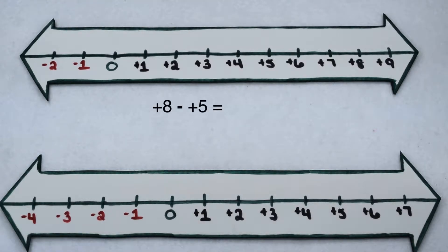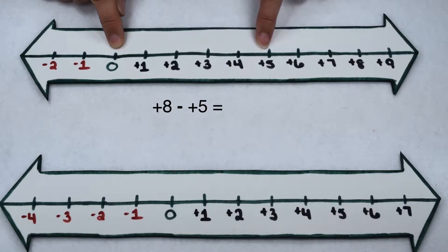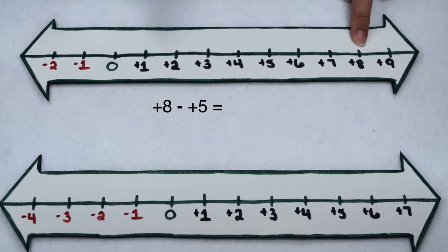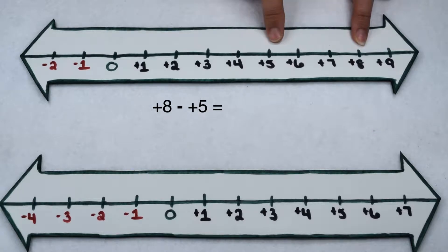Let's start by illustrating positive 8 minus positive 5. To do that, we will start at 0, and positive 8 tells us we're going to go 8 places to the right, since all positive values go to the right. To take away positive 5, I need to do the opposite of positive 5, or I need to head back to the left 5 places.